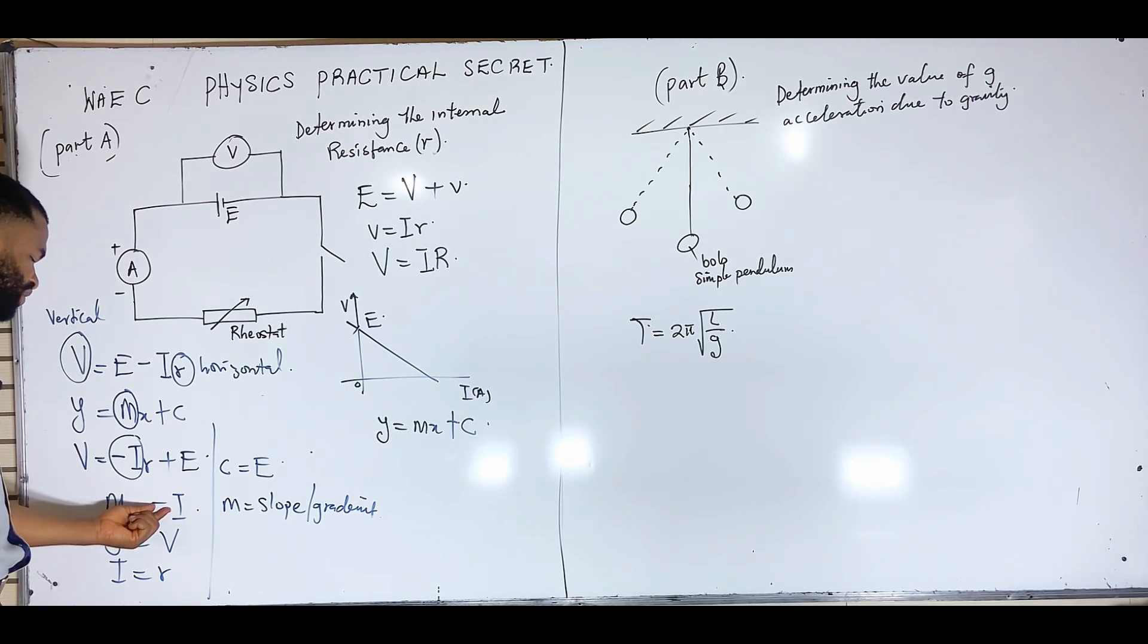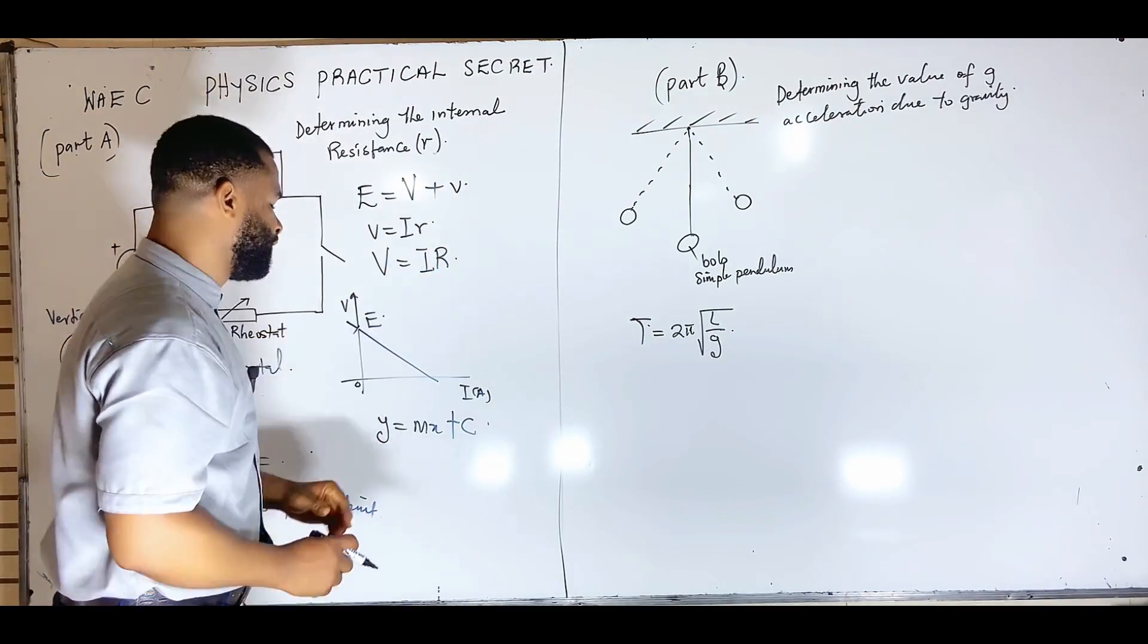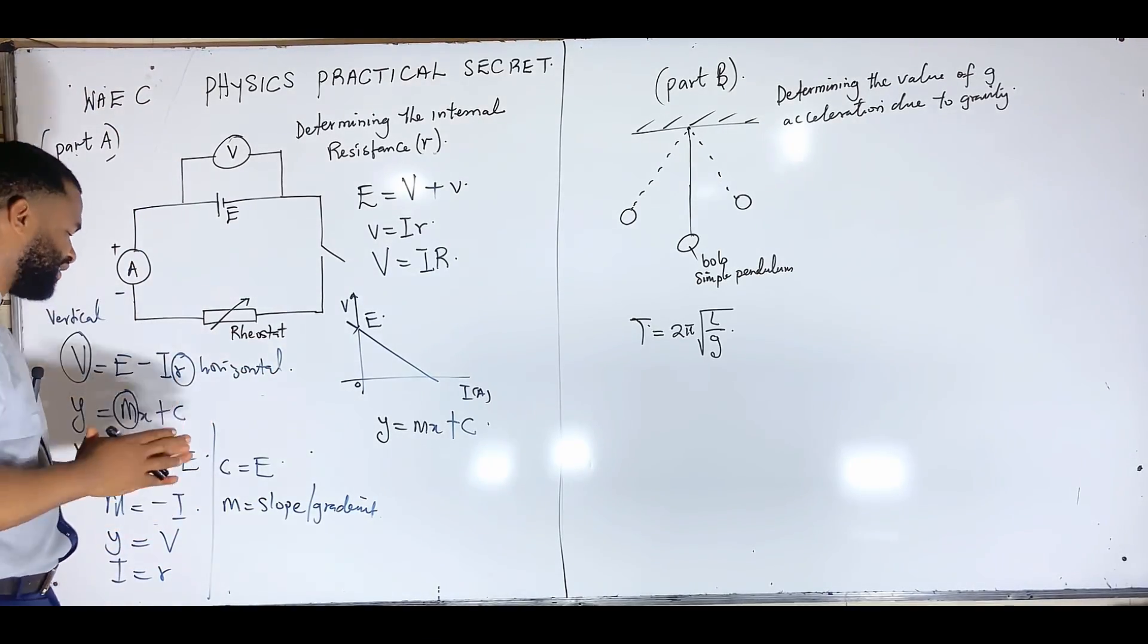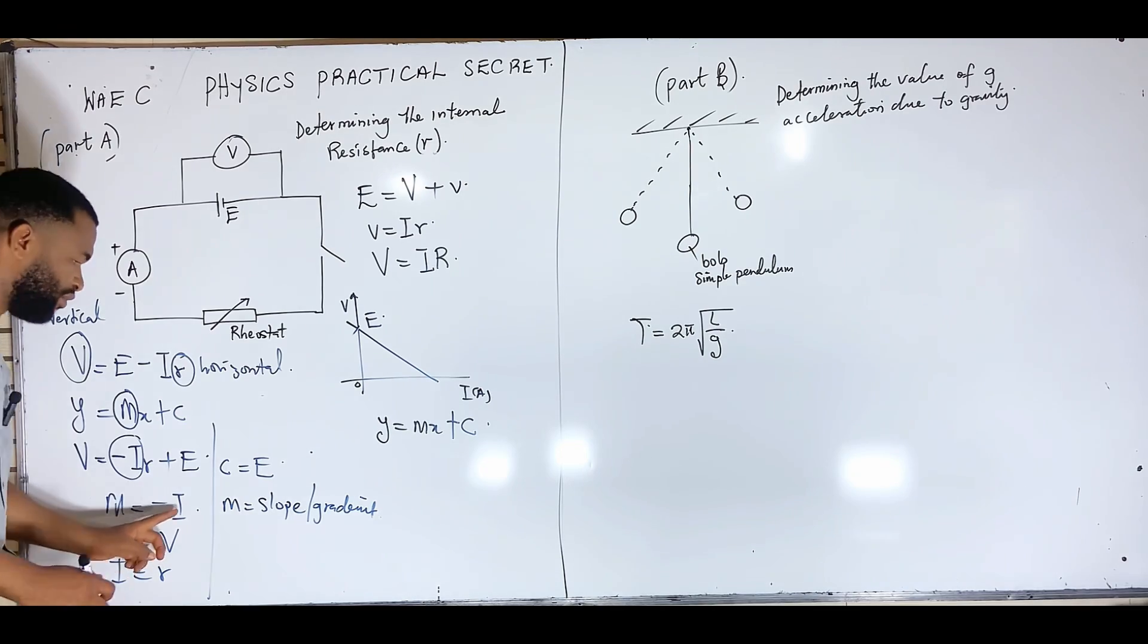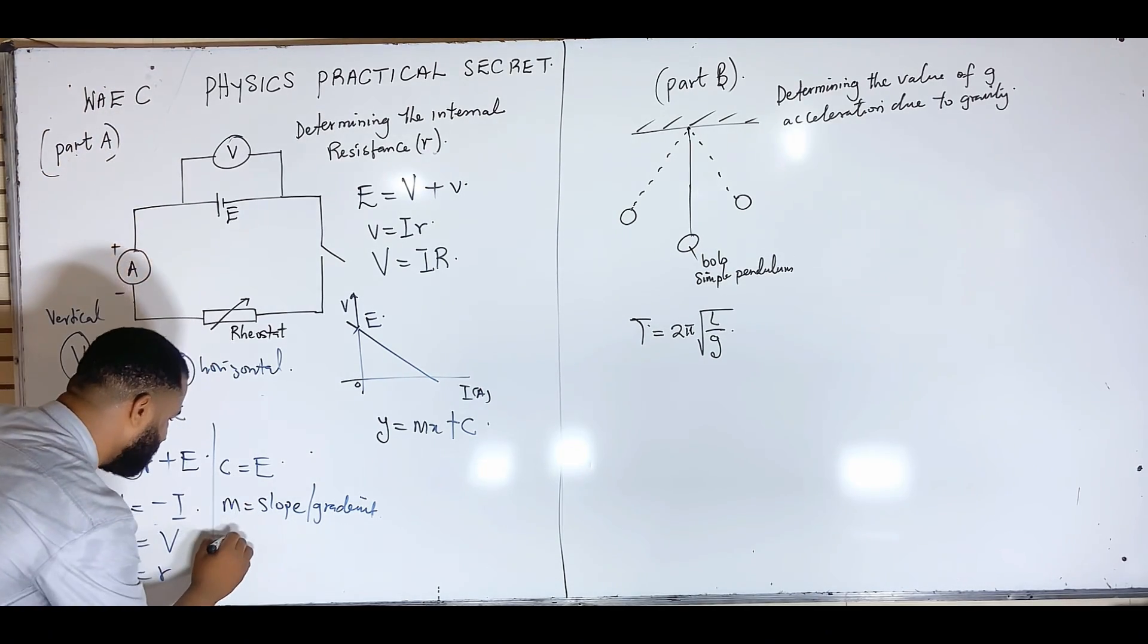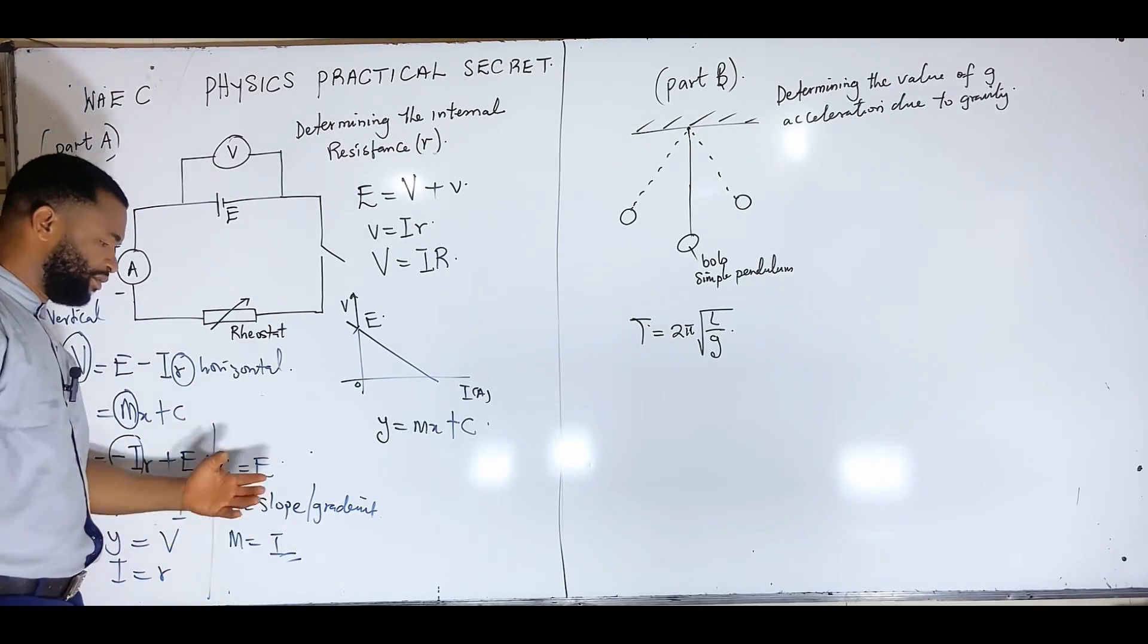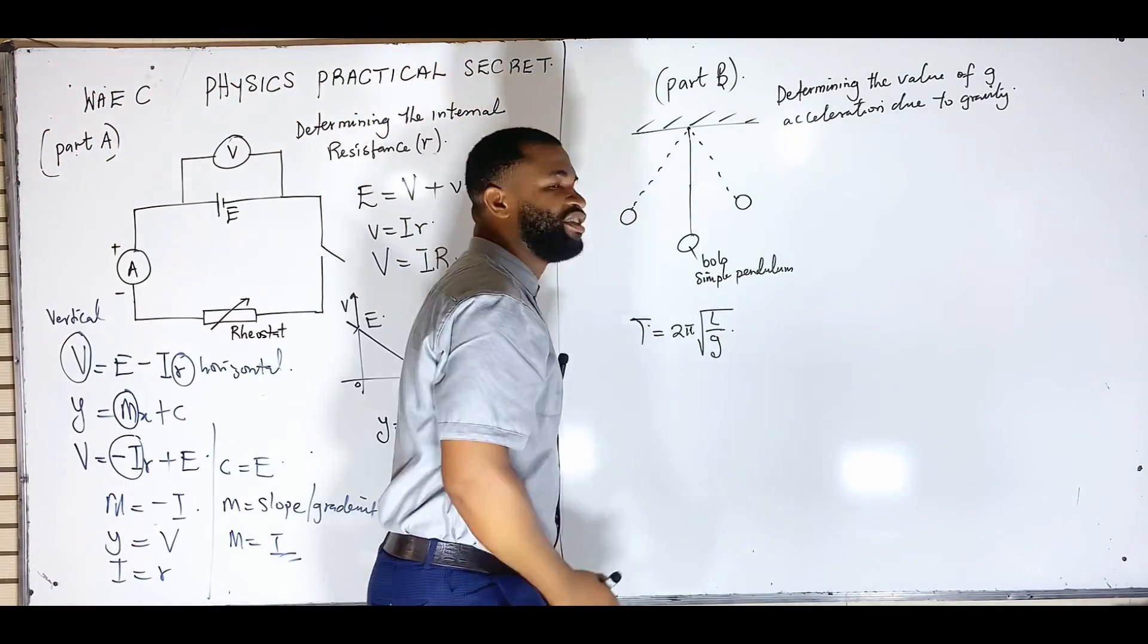I know that whenever my line cuts the Y axis, the value of my EMF is there. And then, I also know that because the gradient is negative, my graph is moving in this direction. And the last thing I'm going to determine from my analysis is that the slope is going to be the current. Therefore, the value of the current is going to be from the slope.